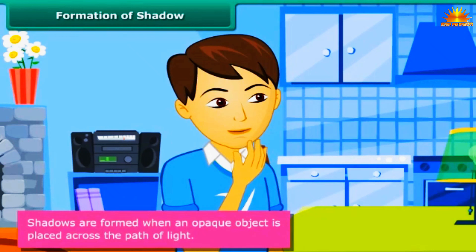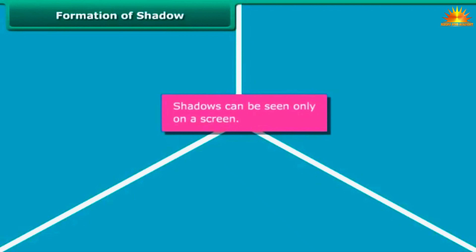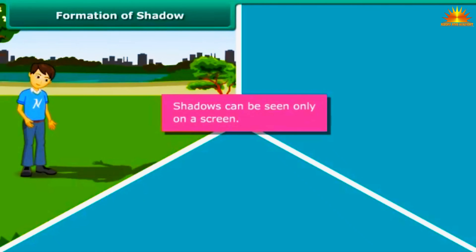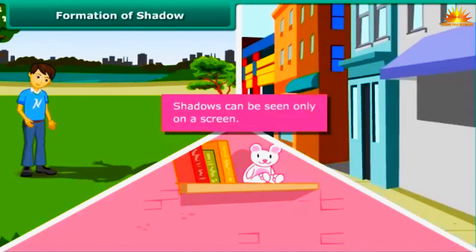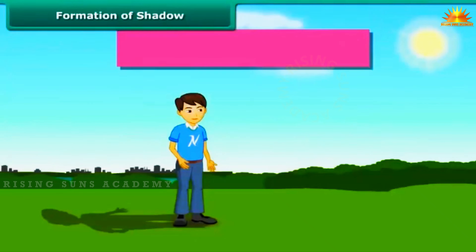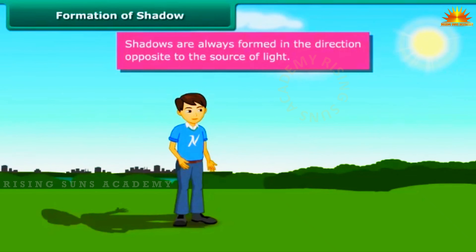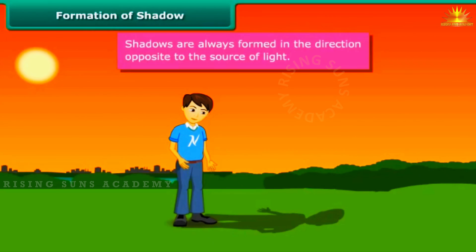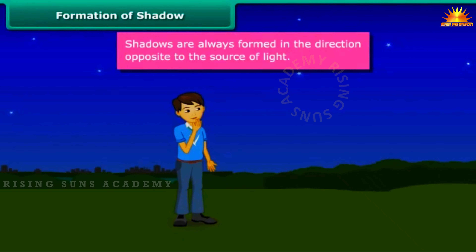Shadows are formed when an opaque object is placed across the path of light. Shadows can be seen only on a screen. The ground, walls of a room, buildings and other such surfaces act as screens for shadows. Shadows are always formed in the direction opposite to the source of light. In the morning, since you were facing the sun, the shadow was behind you. In the evening, the sun was behind you, causing the shadow to form in front of you. When the sun sets, there was no light, and hence there were no shadows.